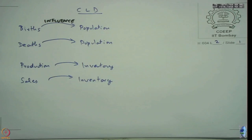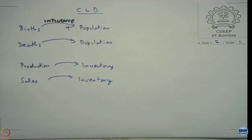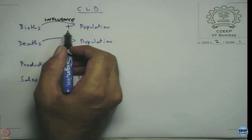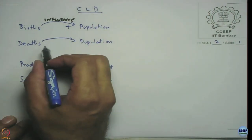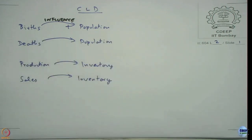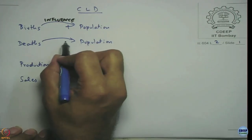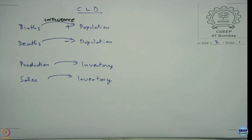We want to visually represent how births affect population. As more births happen, the population increases — it is in the same direction, so we indicate it with a plus symbol on the causal link. For deaths, as more deaths happen, the population falls down. As deaths increase, the population falls, so we indicate that by a minus sign at the head of the arrow. This gives us the idea that as deaths increase, population falls, and as births increase, population increases.